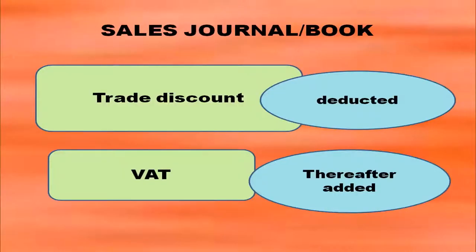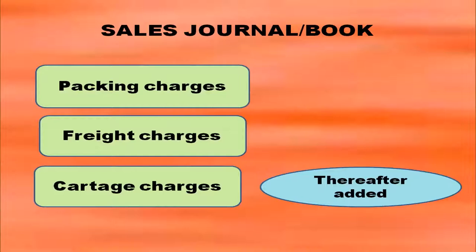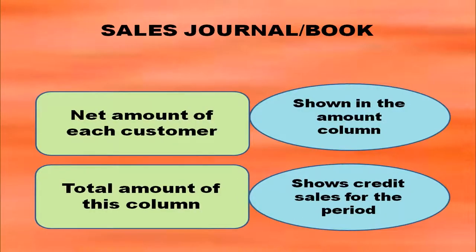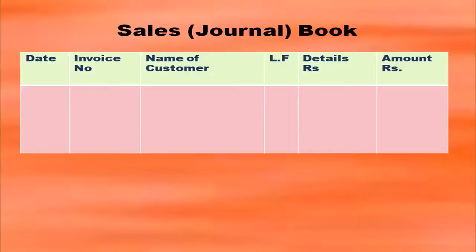If there is a trade discount, you deduct it after doing calculations in the details column. If VAT (value added tax) is given, you add it. If packing charges, freight charges, or cartage charges are given, those should also be added. The net amount of each customer is shown in the amount column, and the total of this column shows credit sales for the period. The format of the sales book has columns for date, invoice number, name of customer, ledger folio, details, and amount.